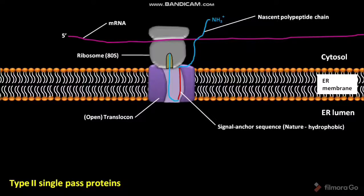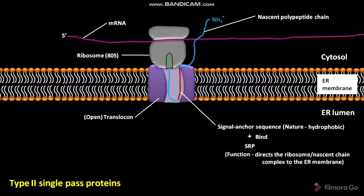After the signal anchor sequence is synthesized on the cytosolic ribosome, it is bound to an SRP, or signal recognition particle. This SRP directs the ribosome-nascent chain complex to the ER membrane. The signal anchor sequence in type II single-pass proteins directs the protein to be inserted into the ER membrane.